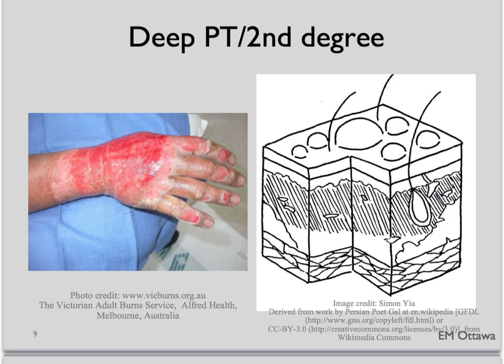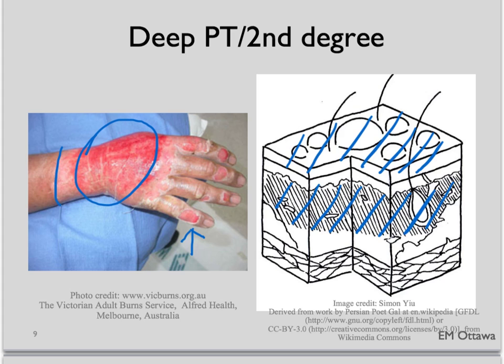Deep partial thickness burn involves the epidermis and a much deeper part of the dermis. Clinically, they form thick-walled blisters, and the skin can be red or white depending on how many capillaries were destroyed during the burn. These burns will heal in a month or so but can cause scarring and contraction of the skin.